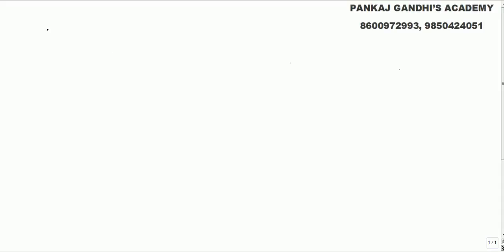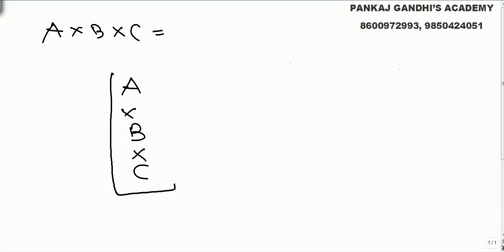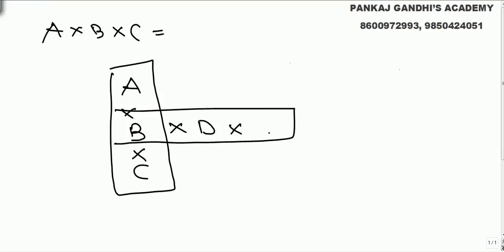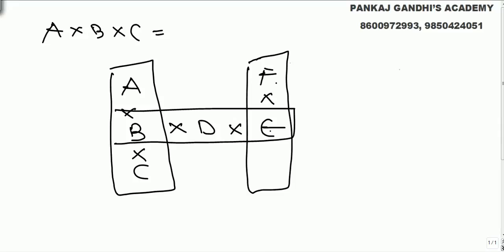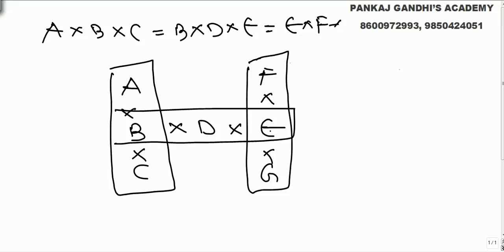The question says: product of a into b into c is equal to product of b into d into e, and is equal to product of e into f into g. So a·b·c = b·d·e = e·f·g. This is a very important concept. In the previous two questions we got nine digits and nine alphabets.